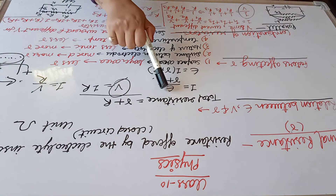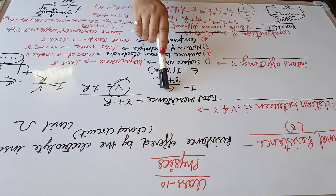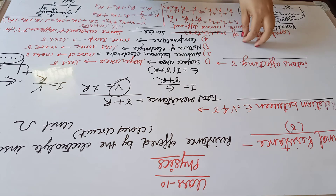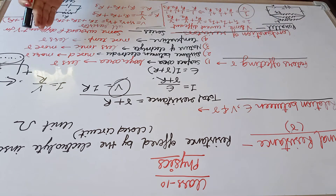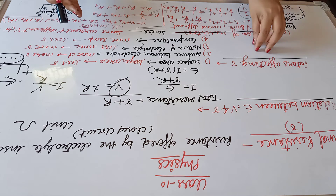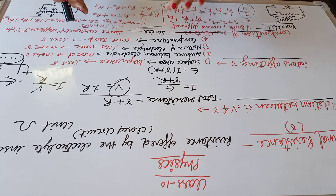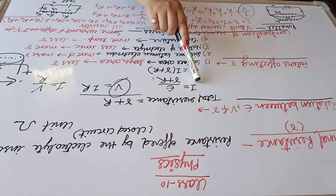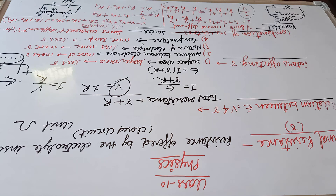In place of V we have the EMF, and in place of resistance, when the current flows through the conductor, the total resistance is the internal resistance plus the external resistance. So we have total resistance as small r plus capital R. Therefore, current I equals epsilon divided by (r + R), and the relation is: epsilon equals I times (R + r).